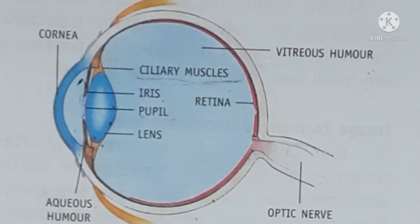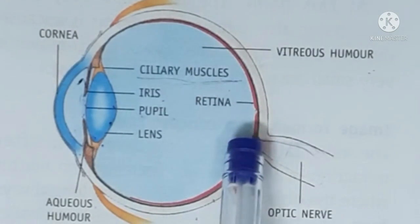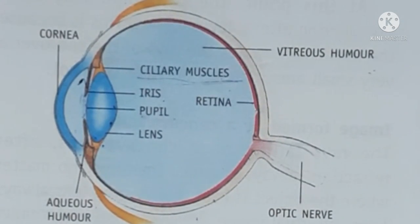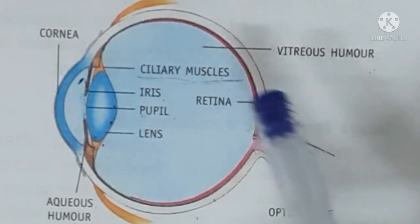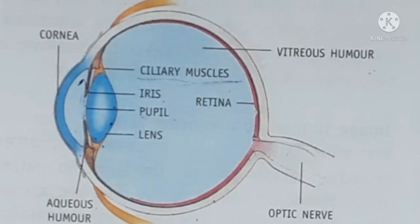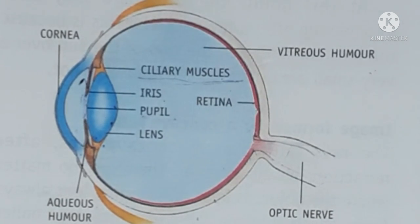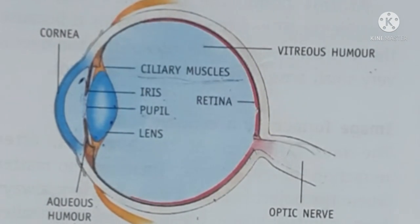Ab yahan pe koi bhi agar image form ho rahi hai toh woh kyun nahi dikhai hai aapko? Baaki aur kahin bhi retina pe pure jagah par image form ho toh dikhai deta hai. So basically kya hota hai — jo blind spot hota hai retina pe, wahan par nahi toh rod cells hote hain nahi cone cells hote hain. Matlab koi bhi nerve cell present nahi hota hai. Aur kyunki jo bhi image aapke retina pe form ho rahi hai usko sense kaun kar raha hai? Woh nerve cells hi sense karti hain na — jo cone aur rod cells hote hain. Aur wahi optic nerve ke through message pahunchate hain. Toh agar cone aur rod cells hongi hi nahi blind spot pe toh image ko sense kaun karega? Aur jab koi image hi sense nahi hogi toh phir woh optic nerve ke through brain tak nahi pahunchegi, toh brain kuch interpret nahi karega, toh aapko kuch dikhai nahi dega. So basically blind spot pe isliye koi cheez nahi dikhai deti kyunki wahan pe koi bhi nerve cells — matlab cones ya rods — nahi hote hain jo ki image ko sense kar sakein.